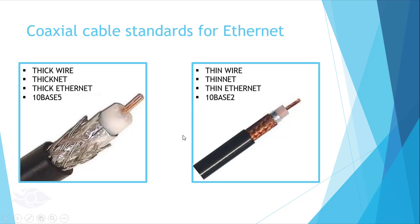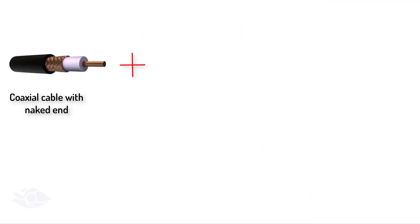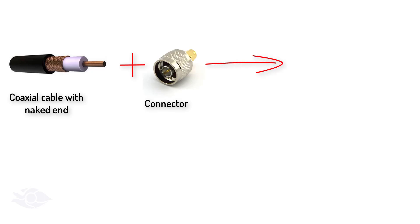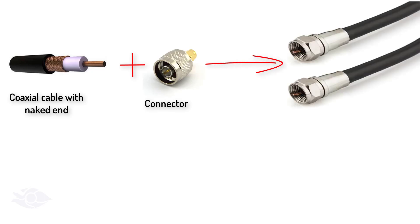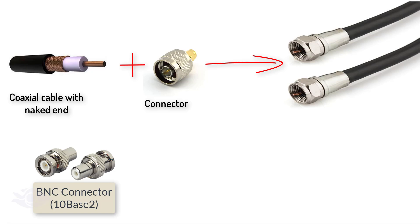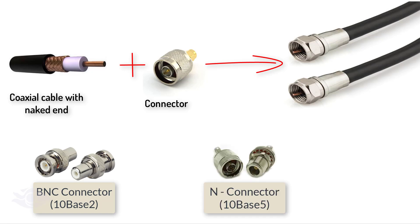Looking at both cables, the 10Base2 has a thin wire at the core. For this reason, it is called thin wire, thin net, thin ethernet, or 10Base2. The same principle applies for 10Base5, which has a thick wire at the core. To connect any of these cables to a computer, you need a connector to terminate the naked end of the cable. This connector is called a BNC connector for 10Base2, or N connector for 10Base5.